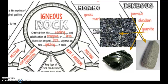Let's start with igneous rocks. Igneous rocks are formed when we have magma or lava cooling. Igneous rocks can become crystallized — they do crystallize — and depending on how quickly they cool will tell you the size of the crystal.